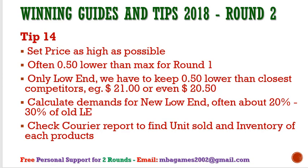Tip 14: Set price as high as possible — not the maximum, but high enough for good profit margin. You can often reduce 50 cents from the highest price in the segment. Check the courier report for each segment's best-selling price, then set your price 50 cents lower than the top-selling product. For example, for low-end: if the best-seller is $21, set yours at $20.50 or reduce from $21.50 to $21. This approach can effectively capture demand for low-end.